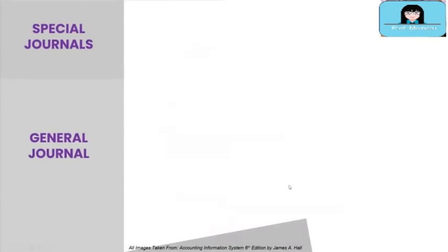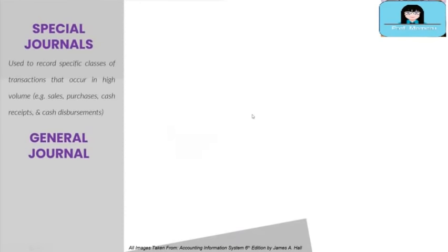Now let's discuss the types of journals, starting with special journals. Special journals are used to record specific classes of transactions that occur in high volume, such as sales, purchases, cash receipts, and cash disbursements. Special journals are discussed in detail in your basic accounting subjects, but for review purposes we will illustrate using a diagram. The diagram on your screen illustrates an example of a special journal called the sales journal, meaning every credit sale is recorded in the sales journal.